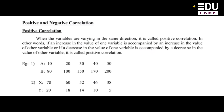The first type is positive and negative correlation. When the variables are varying in the same direction, it is positive correlation. If an increase in the value of one variable is accompanied by an increase in the value of the other variable, or if a decrease is accompanied by a decrease, it is called positive correlation.